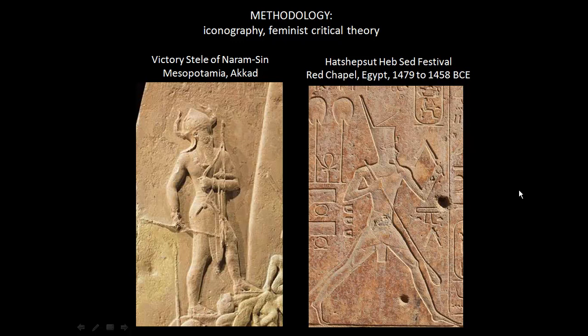We can also see that they're wearing similar clothing — a short kilt. There was a lot of cultural exchange between Egypt and Mesopotamia. The short kilt can represent the pharaoh but also the military, since these kilts are worn in war because they allow mobility — your legs are unrestrained. It's a representation of action and movement, showing that these kings are actively ruling their territory rather than just sitting on a throne.